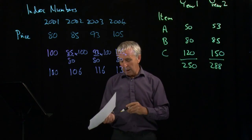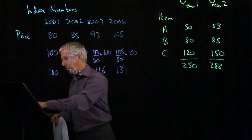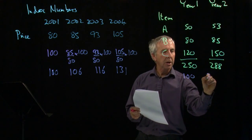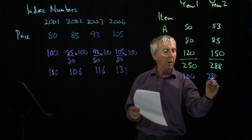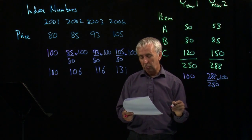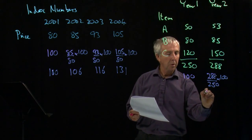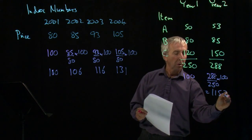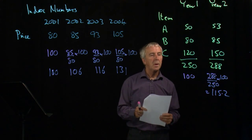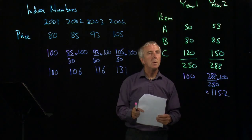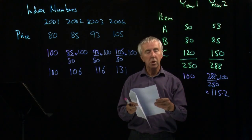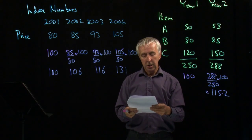So if we now take year one as 100, the index here is 288 over 250 times 100, and that comes to 115.2. And that seems a very reasonable thing to do. However, there's an alternative, which would be to look at the inflation or the index for each one separately and take the average.